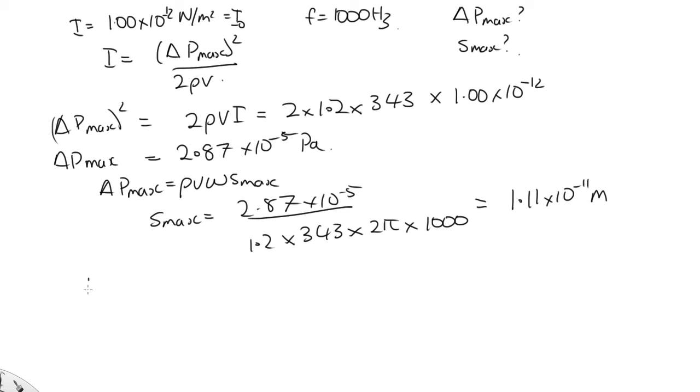Now in the second case, the intensity was equal to 1.0 watt per meter squared, so a much larger number. All we need to do is substitute into these equations in exactly the same way. When we do that, we end up with the maximum pressure is equal to 28.7 pascals, and S is equal to 1.11 times 10 to the minus 5 meters.